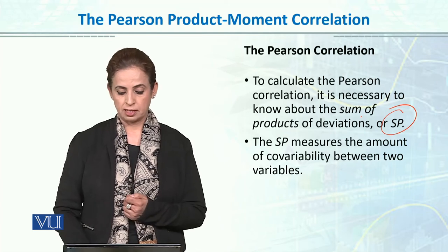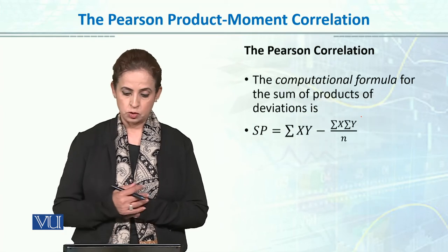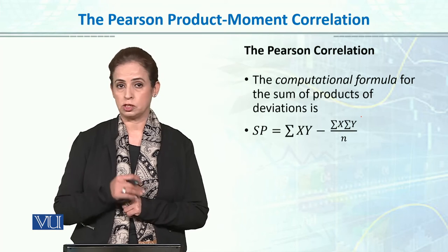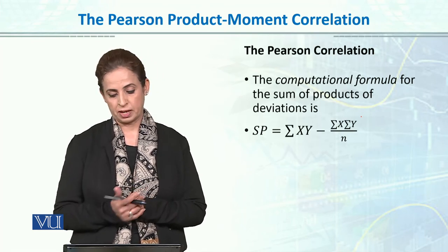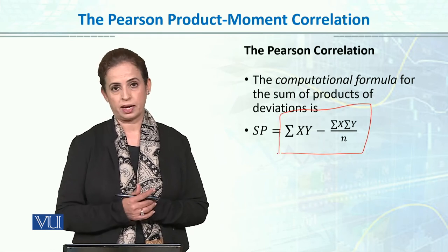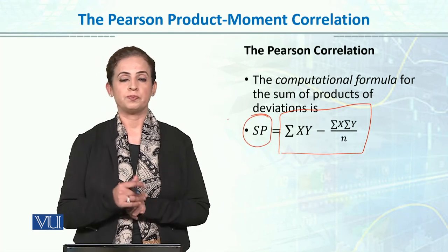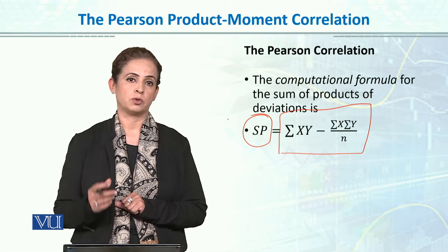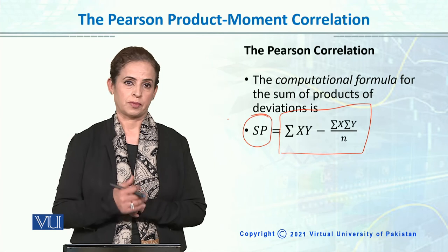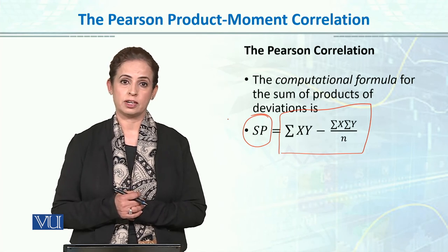The SP measures the amount of co-variability between x and y. The computational formula for the correlation coefficient using the product-moment correlation method would be: summation of xy minus summation of x times summation of y, divided by n — this gives us SP. Once we calculate SP, we can then calculate the correlation coefficient. In the next module, we will be calculating Pearson product-moment correlation manually.